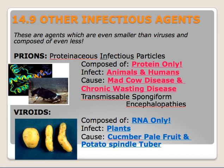Viroids are the other type of infectious agent — they're composed of RNA only and they infect plants. They can cause what's known as cucumber pale fruit: you know how cucumber has dark green skin but a light-colored inside? With cucumber pale fruit, the skin is actually the same light green color. Another example is potato spindle tuber viroid — you can see a normal potato on the left and the two next to it both have the potato spindle tuber viroid.